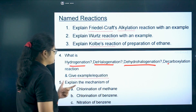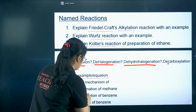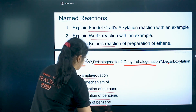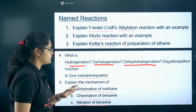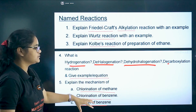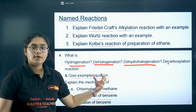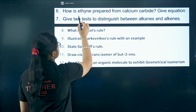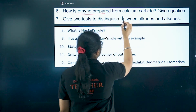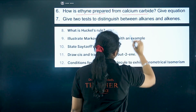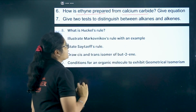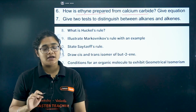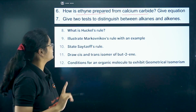Next, explain the mechanism of chlorination of methane, chlorination of benzene, and nitration of benzene — all these reactions you can prepare. Now, how is ethyne prepared from calcium carbide? Give the equation — ethyne preparation from calcium carbide is a very important reaction.